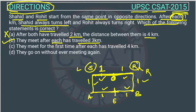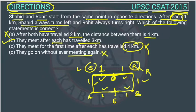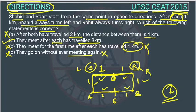The third option says they meet for the first time after each has traveled four kilometers — this is wrong, they traveled three kilometers. The fourth option says they go on without ever meeting again — this is also wrong because they meet after three kilometers. So the answer is option B. The question is like a puzzle, so we just have to read it very carefully to get the answer.